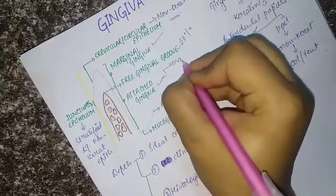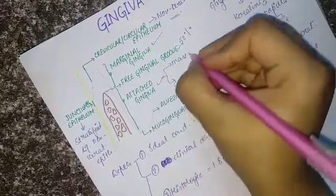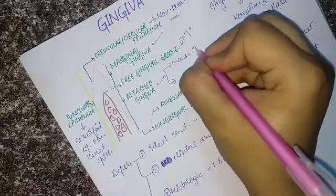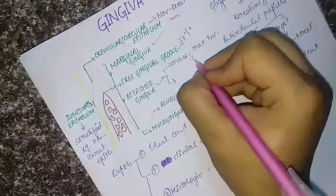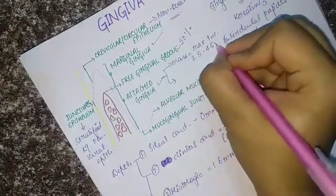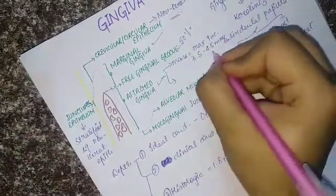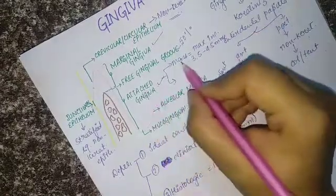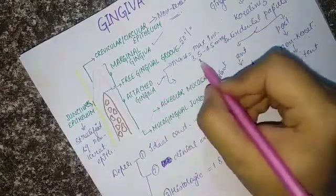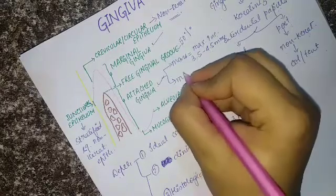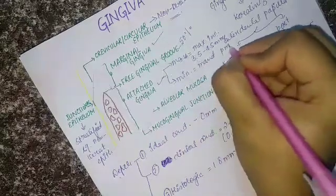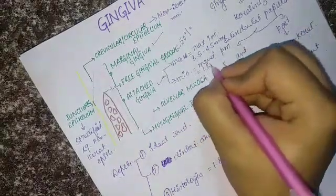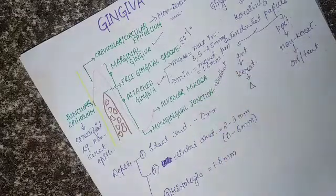The attached gingiva is keratinized. It is maximum in the maxillary incisor region, measuring 3.5 to 4.5 mm. It is minimum in the mandibular premolar region, which is 1.8 mm.